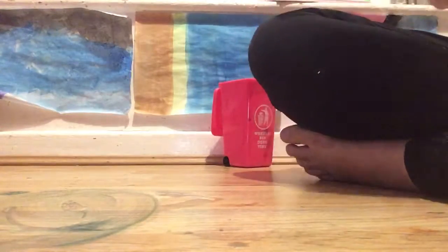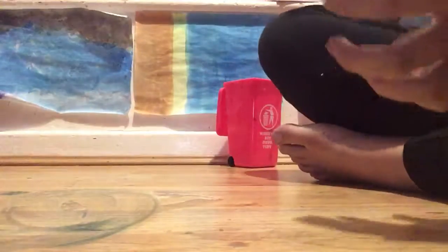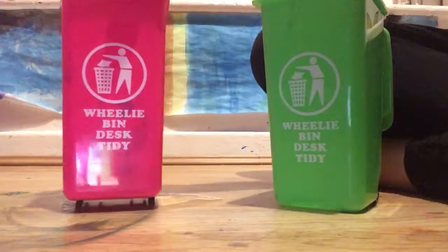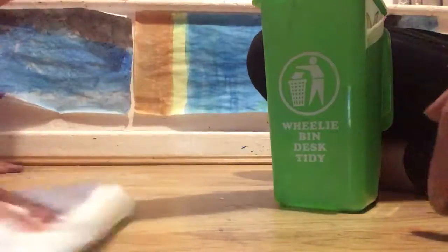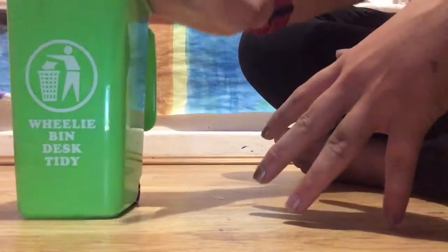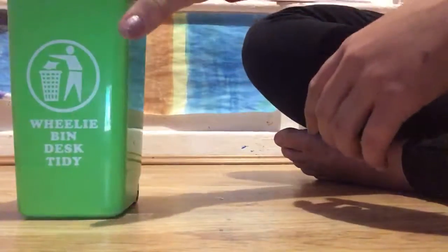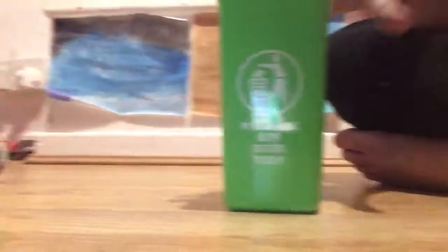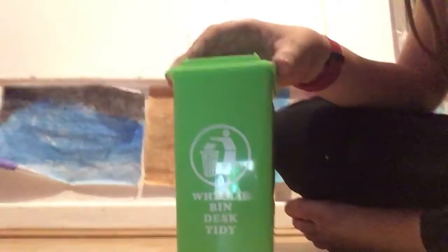Then we will show you these cute pots we keep them in. So we keep the paintbrushes in this pink wheelie bin desk tidy pencil case. This is from Poundland, or the dollar store. Then we have the same but in green, and this is what we keep our water in to clean our paintbrushes. We just close the lid, and that's the same with pink.